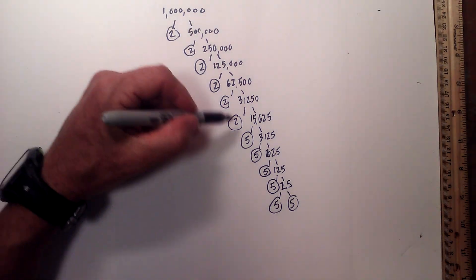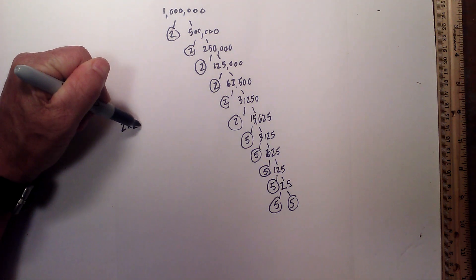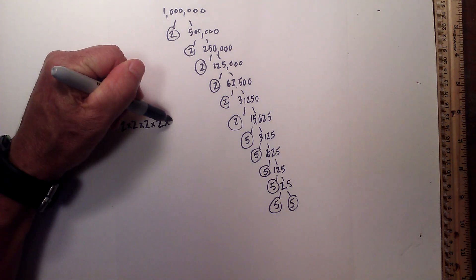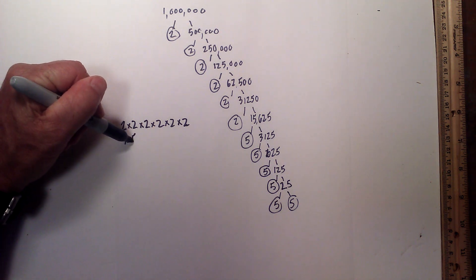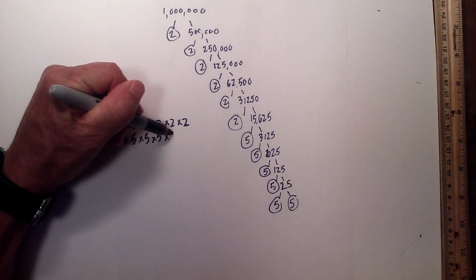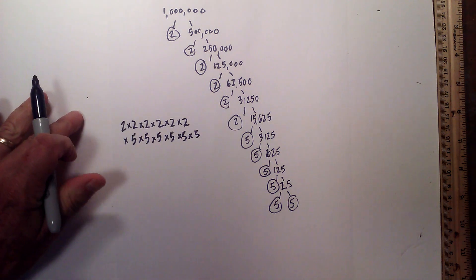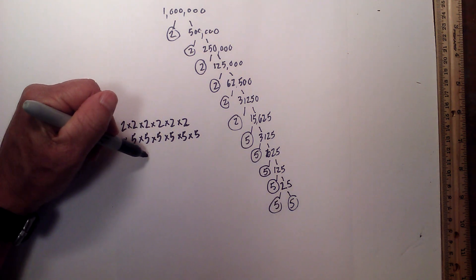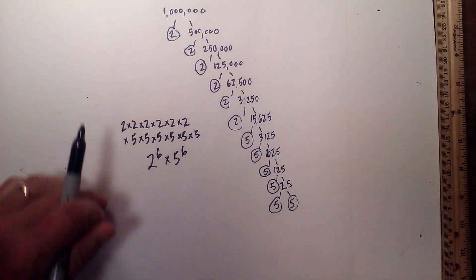If you count the 2's there are 6. So the prime factorization of a million is 2 times 2 times 2 times 2 times 2 times 2 — that's six 2's — times 5 times 5 times 5 times 5 times 5 times 5 — that's six 5's. Or you can rewrite it as 2 to the 6th times 5 to the 6th.